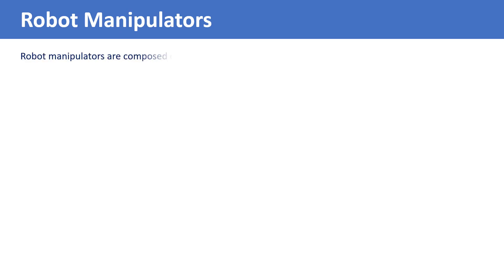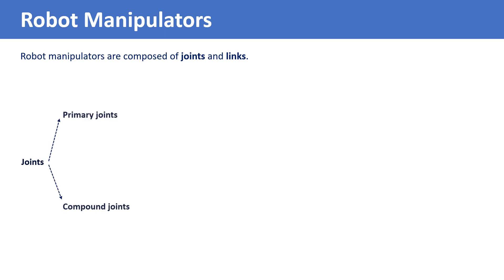Manipulating industrial robots, which are also known as robot manipulators or simply manipulators, are composed of joints and links. There are two main types of joints for robot manipulators: primary joints and compound joints.